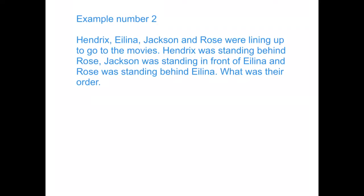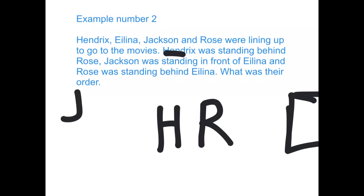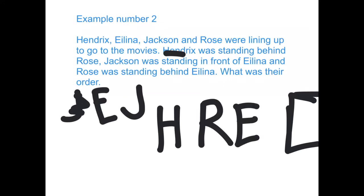We write down what we know from the story. The first thing says Hendrix is standing behind Rose. So if they're all lining up at the front, Rose should be in front and Hendrix is standing behind her. And Jackson is standing in front of Alina — so Jackson's standing in front, and behind Jackson is Alina. Now it says Rose was standing behind Alina. So Rose should be standing behind Alina, which means Alina needs to be here, and Jackson should be at the front.